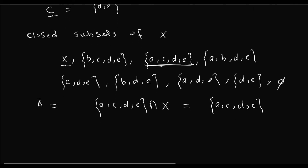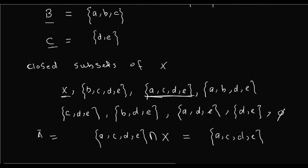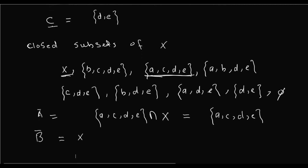The elements in B are {a,b,c}. Looking at the closed sets, {a,b,c} is only contained in X. So the closure of B is equal to X.